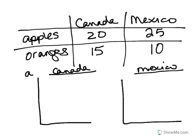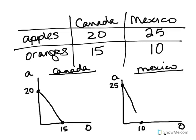Each axis has to be one or the other: apples and oranges. If Canada is just producing apples, they can produce 20 apples — we'll plot that right there. And if they only produce oranges, they can produce 15 oranges — that's right there. All we have to do is connect those dots, and that would be Canada's production possibility curve. Then we do the same thing for Mexico: only apples puts us right here at 25, only oranges is 10 right here, and we connect those dots to get Mexico's production possibility curve.